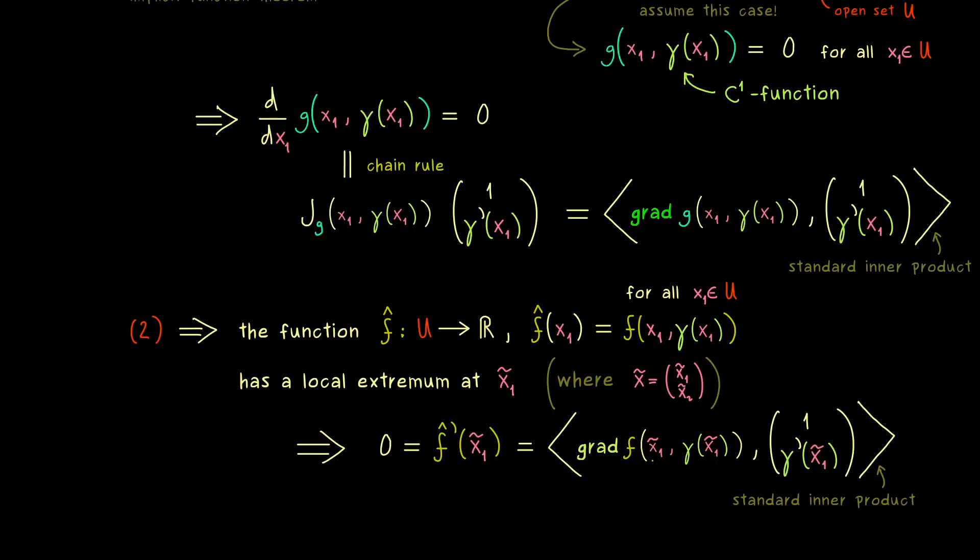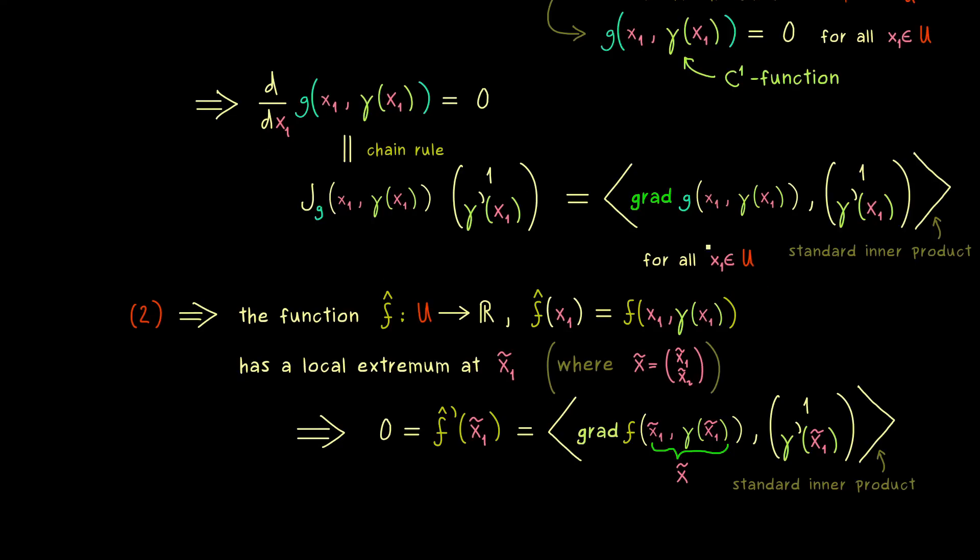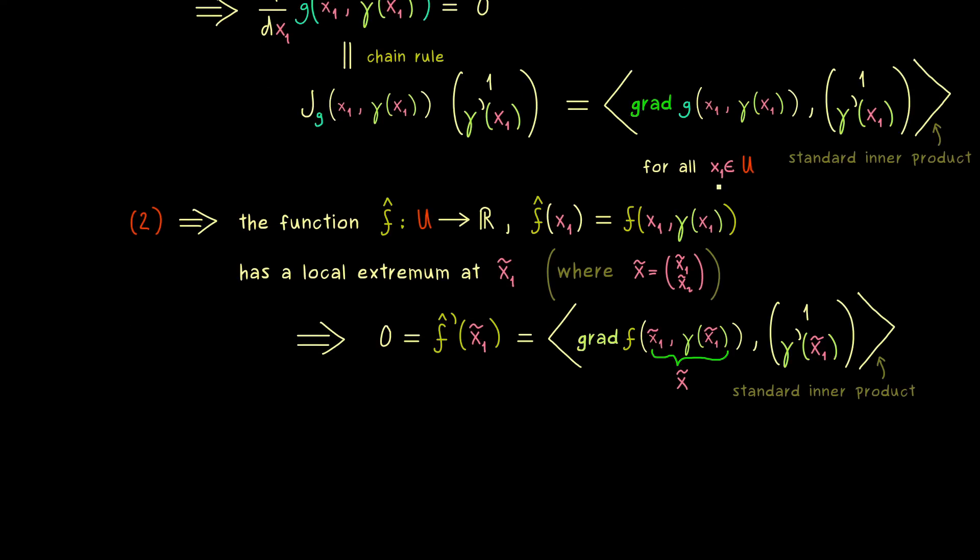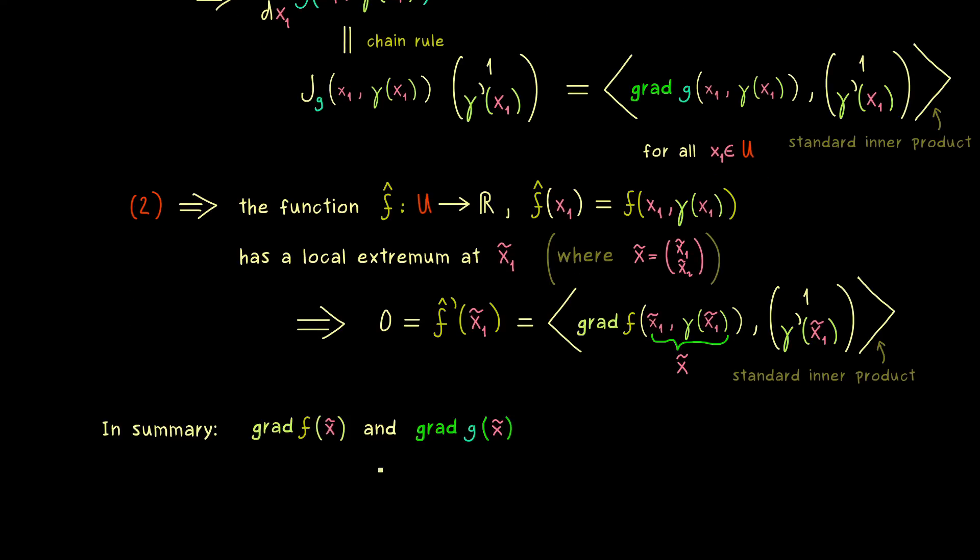Therefore here we have a claim for the gradient of f at the point x̃. But we have the same claim here for the gradient of g. Because this equation here holds for all x₁ in U. So in particular it also holds for the point x₁̃. So in summary we get that the gradient of f and the gradient of g at the point x̃ are orthogonal to the same vector.